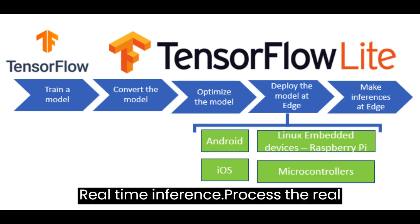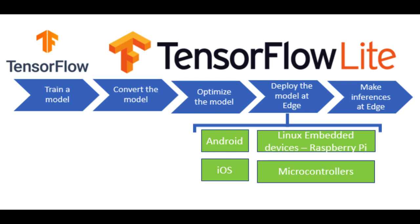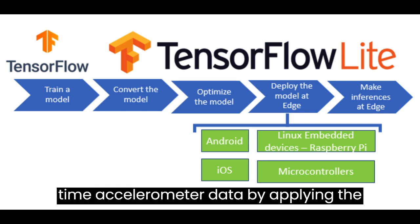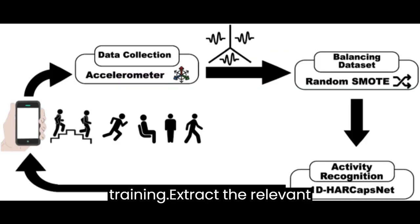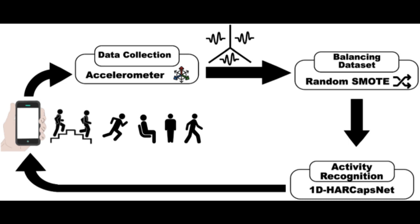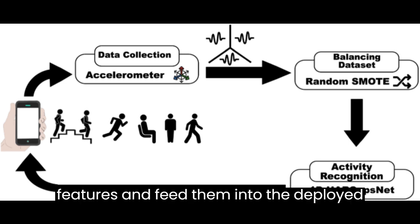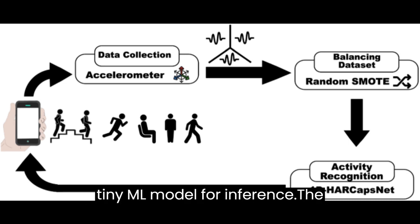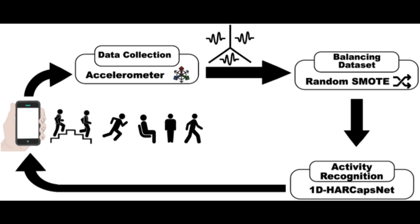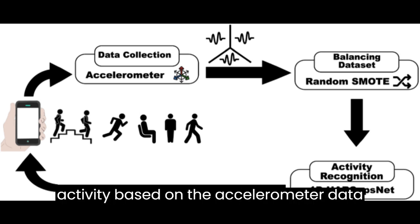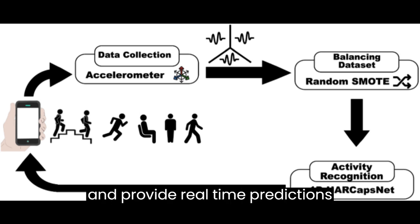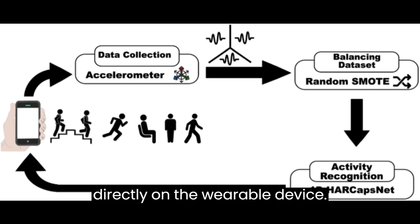Real-time inference. Process the real-time accelerometer data by applying the same pre-processing steps used during training. Extract the relevant features and feed them into the deployed TinyML model for inference. The model will classify the physical activity based on the accelerometer data and provide real-time predictions directly on the wearable device.